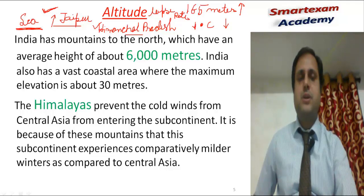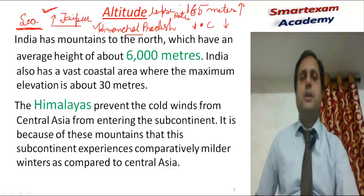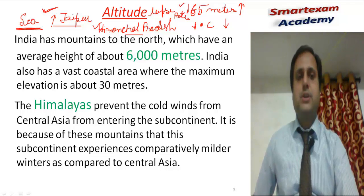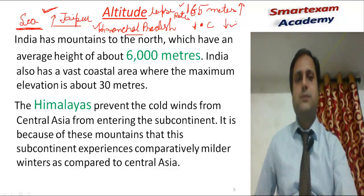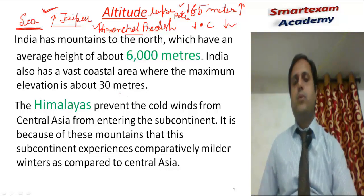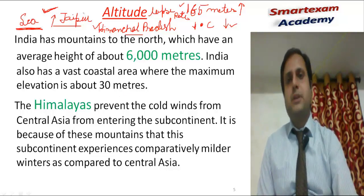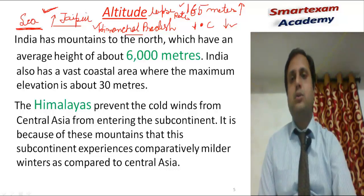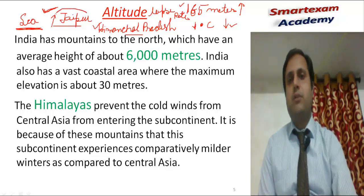This is called the lapse rate. Lapse rate is a common term in the troposphere. Lapse rate means the decrease in temperature — for every 165 meters of ascent, 1 degree temperature decreases. Because of the lapse rate, the temperature of hilly areas decreases, while the temperature at the Indo-Gangetic plain always remains higher.